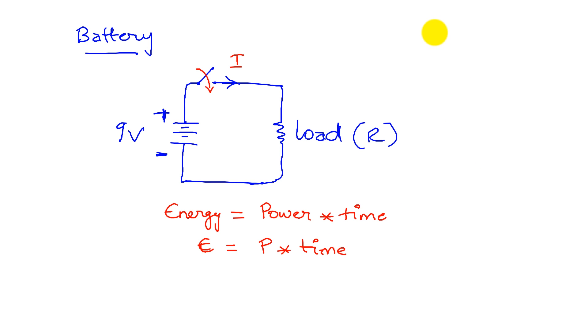But we also know power P is given by V times I so I can write this as V times I times time. So when we have a battery, the battery has a fixed amount of energy so this is fixed. And one of the properties of a battery is it provides a constant voltage, this is also fixed.